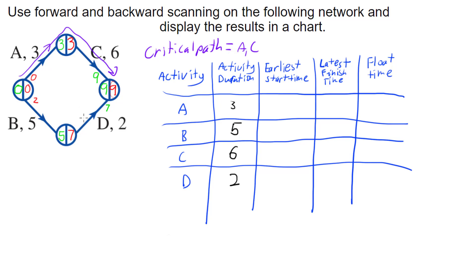The earliest start times come from the forward scanning — the number in the node to the left of each arc. The earliest I can start A is zero, and in fact it must start at zero because it's on the critical path. The earliest I can start B is zero. The earliest I can start C is minute three. The earliest I can start D is minute five.